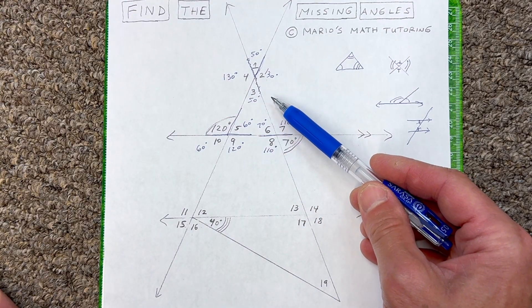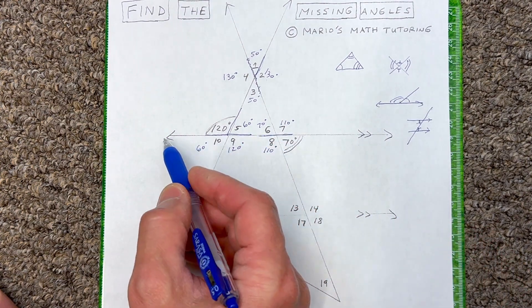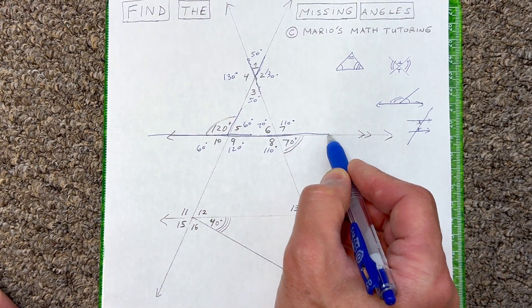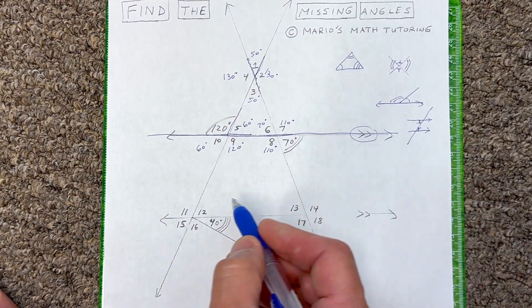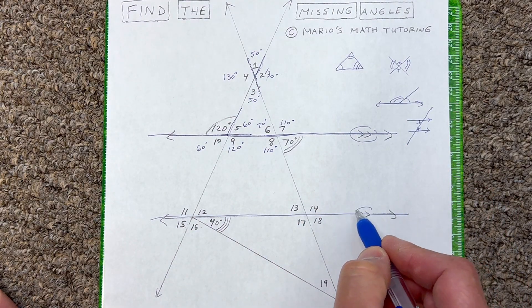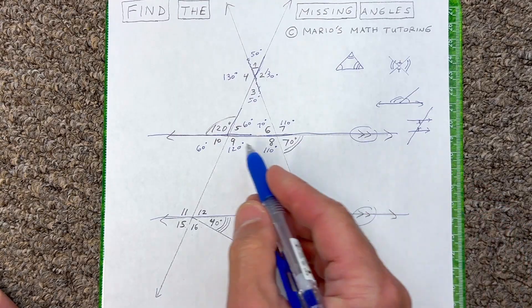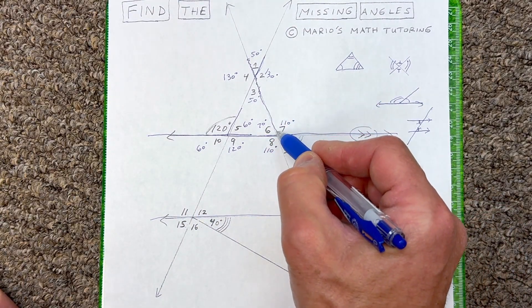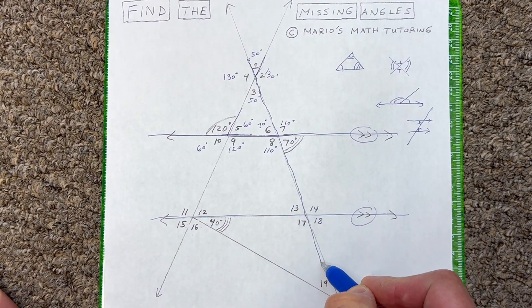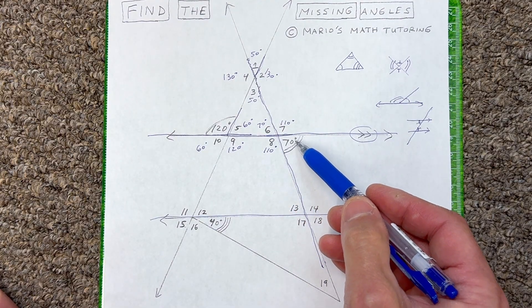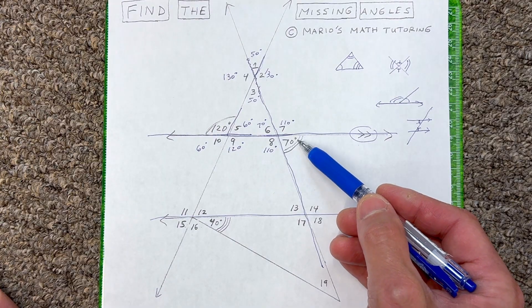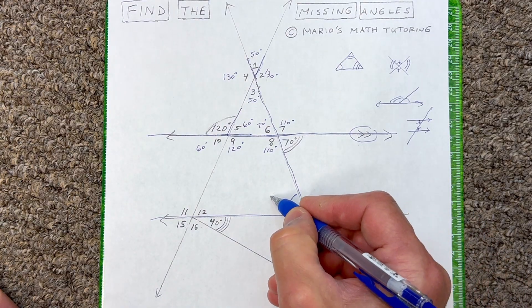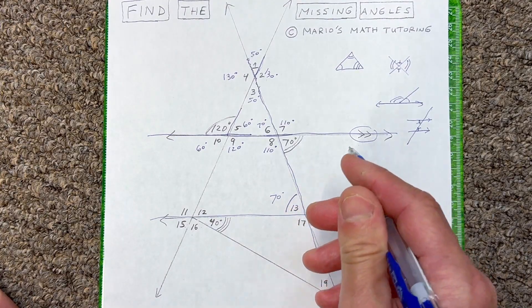Let's keep making our way down. You can see this line here with a tick mark symbol, and this line here has the same symbol — that tells us these two lines are parallel. This third line is the transversal — it cuts across those two parallel lines. Notice that the 70 degree angle and angle 13 are alternate interior angles, so angle 13 will also be 70 degrees.